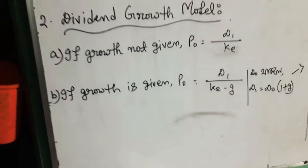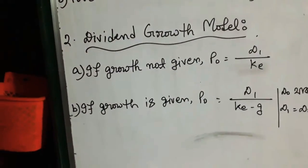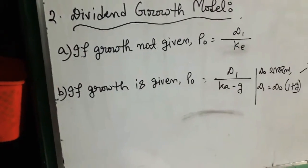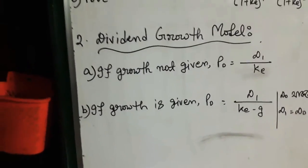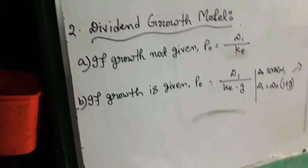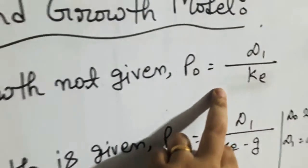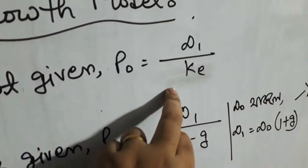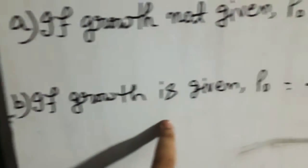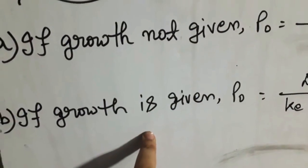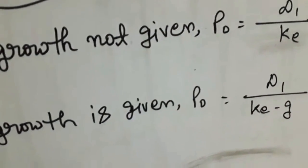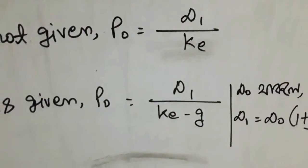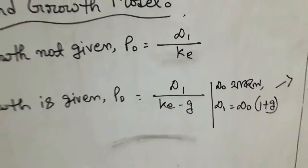This is very important. If you look at the dividend growth model, if you look at the solution, it will be equal to D1 divided by ke. If the growth rate is given, then you will get to value. The value compared is D1 divided by (ke minus g).